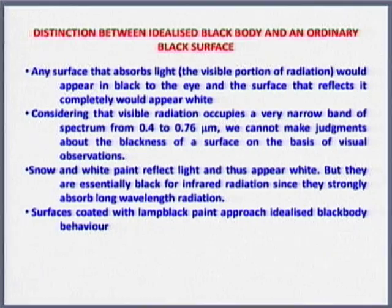What is the distinction between an idealized black body and an ordinary black body? All black-painted bodies need not be black bodies, and all white surfaces visible to the eye are not necessarily non-black bodies. For example, snow has an emissivity of one — it acts as a perfect emitter. So the color of a surface does not determine whether it is an idealized black body.